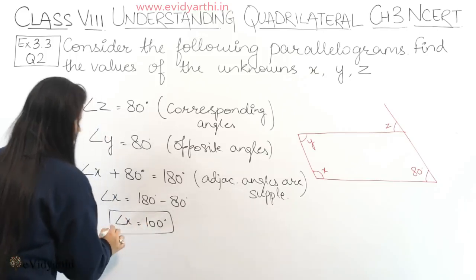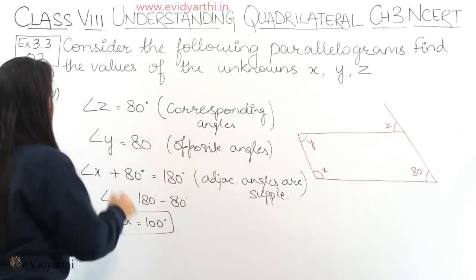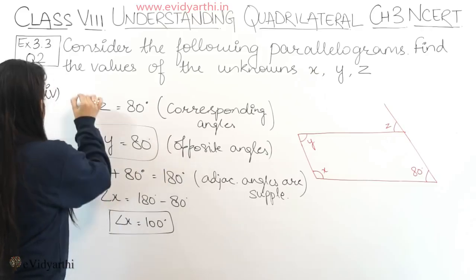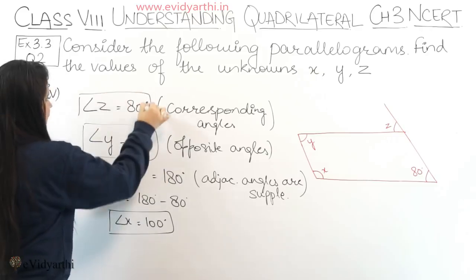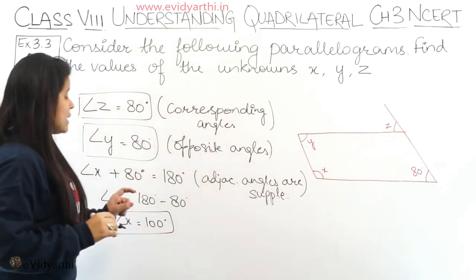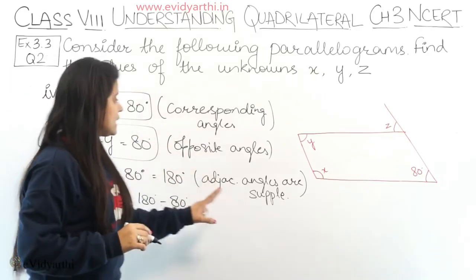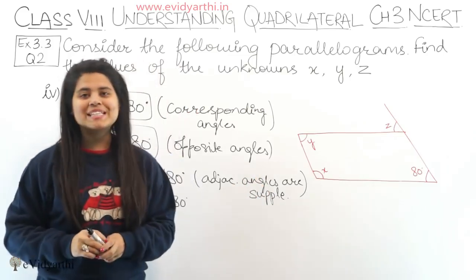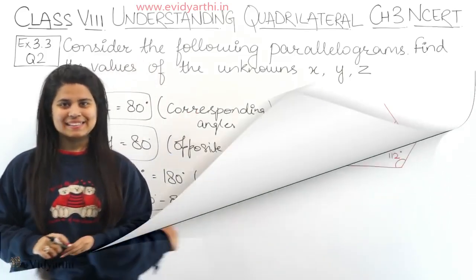So x = 180 - 80 = 100°. Therefore x = 100°, y = 80°, and z = 80°. This was part number 4. Now let's come to the next part.